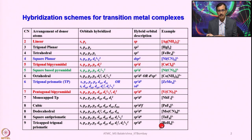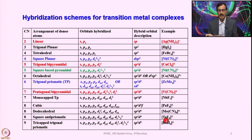An example is the octafluorotantalate³⁻ complex. For the last entry with coordination number 9, the most symmetric geometry is tricapped trigonal prismatic, where all valence orbitals are utilized giving SP3D5 hybridization. The example is ReH9²⁻, which has 9 metal-to-hydrogen bonds — one of the rare examples of a homoleptic hydride with as many as 9 metal-to-hydrogen bonds.